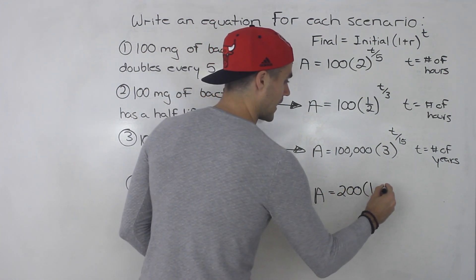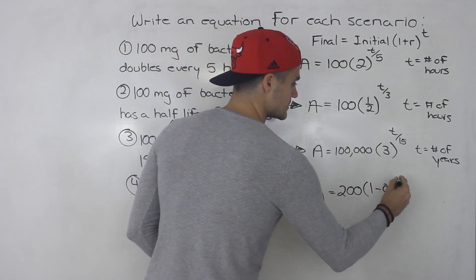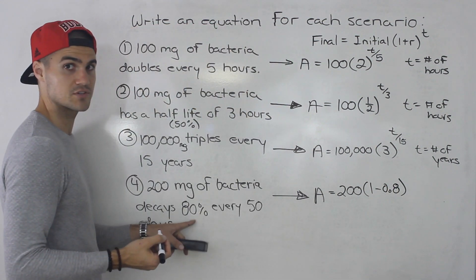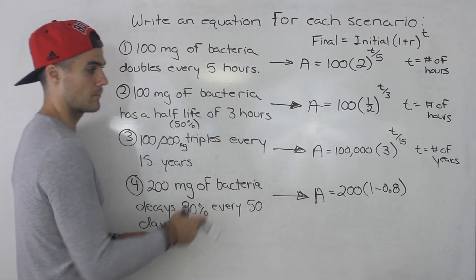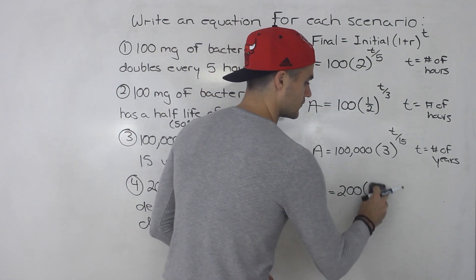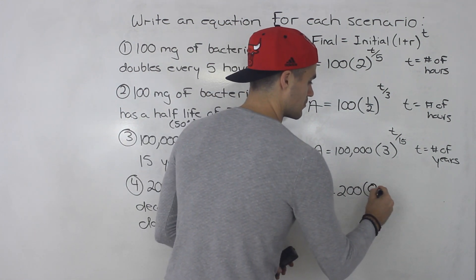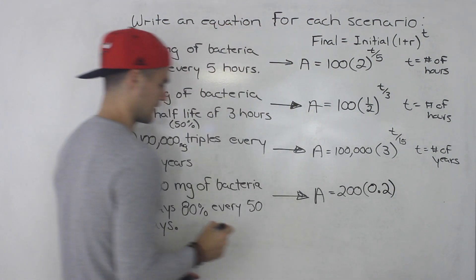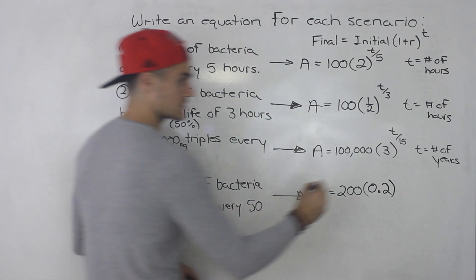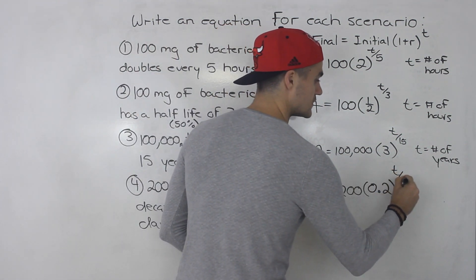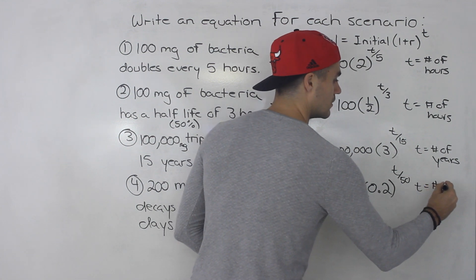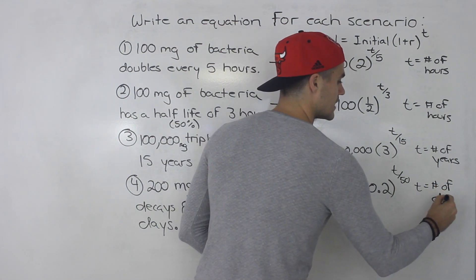And this is going to be one minus 0.8. One minus that decay rate of 80% in decimals. One minus 0.8 just gives us 0.2. So we just write 0.2 here. And this is happening every 50 days. So this would be t over 50 if we let t equal the number of days.